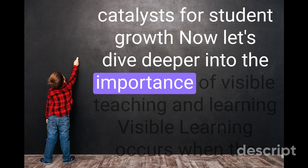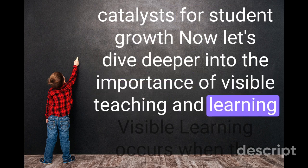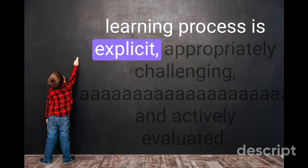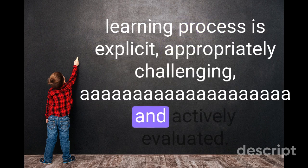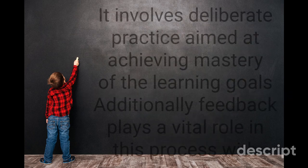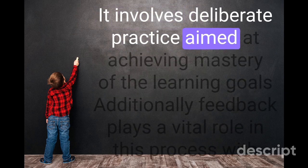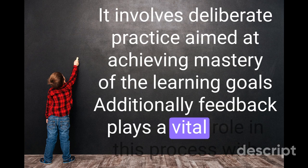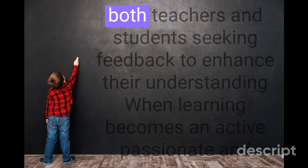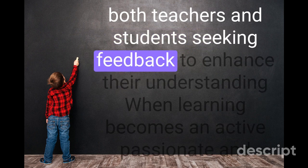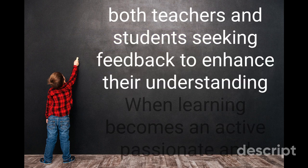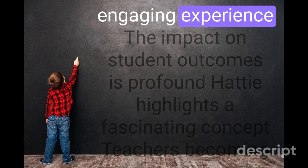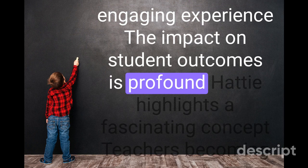Visible learning occurs when the learning process is explicit, appropriately challenging, and actively evaluated. It involves deliberate practice aimed at achieving mastery of the learning goals. Additionally, feedback plays a vital role in this process, with both teachers and students seeking feedback to enhance their understanding. When learning becomes an active, passionate, and engaging experience, the impact on student outcomes is profound.